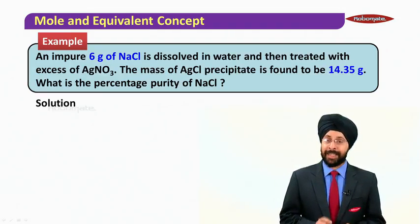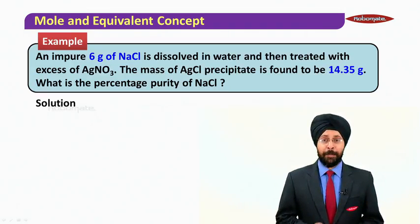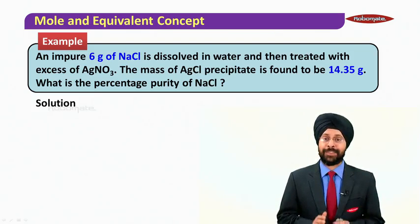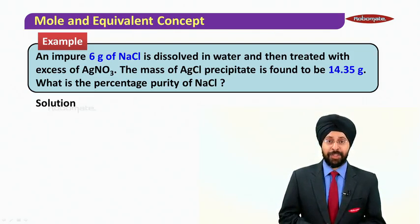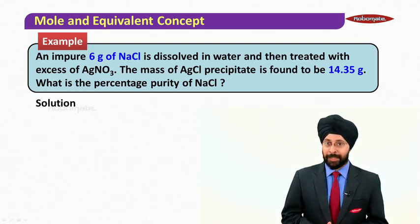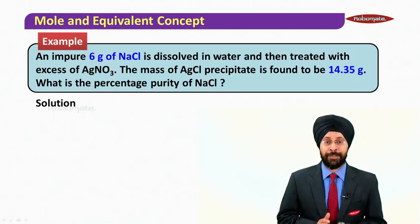Let us take the example first. An impure 6 grams of NaCl is dissolved in water and then treated with excess of silver nitrate. The mass of AgCl precipitate is found to be 14.35 grams. What is the percentage purity of NaCl?